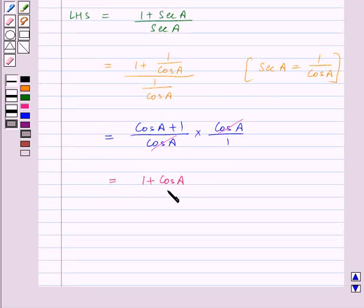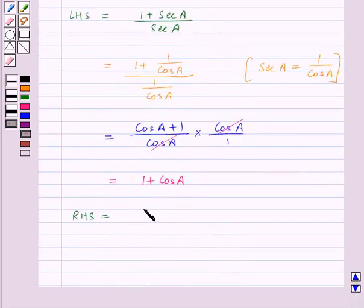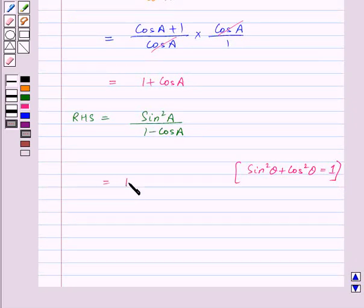Now let us move on to RHS which is equal to sin square a upon 1 minus cos a. We know that sin square a plus cos square a is equal to 1, so sin square a will be equal to 1 minus cos square a. Therefore, RHS becomes 1 minus cos square a upon 1 minus cos a.